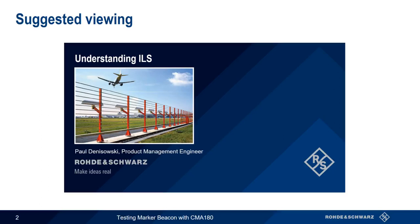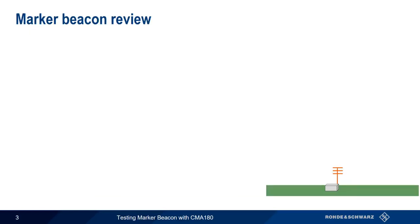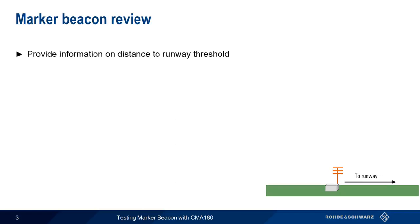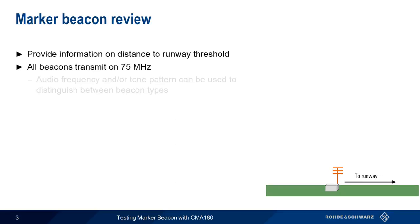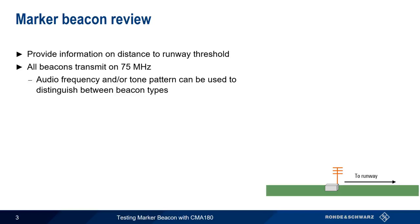Marker beacons are part of ILS, or the Instrument Landing System. If you're not already familiar with marker beacons, you might want to watch the presentation Understanding ILS before proceeding. Marker beacons provide information on the distance to the runway threshold. All marker beacons transmit on the same frequency of 75 MHz, so the audio frequency and/or the pattern of audio tones transmitted by the beacon can be used to distinguish between the different beacon types.